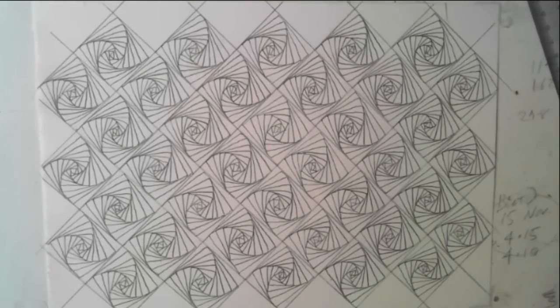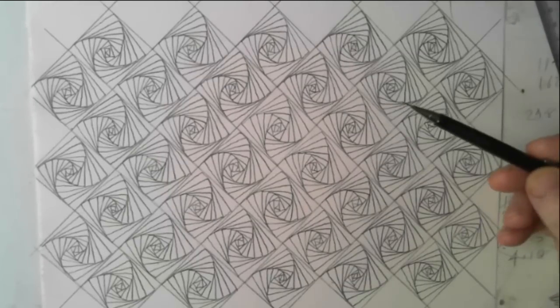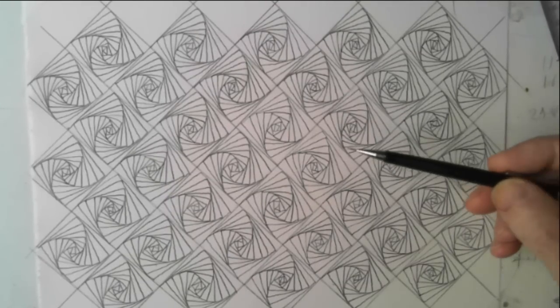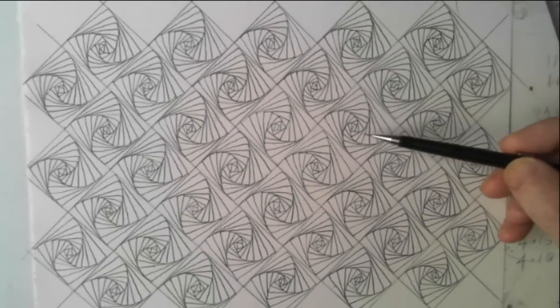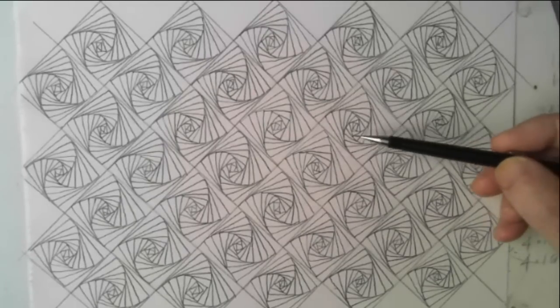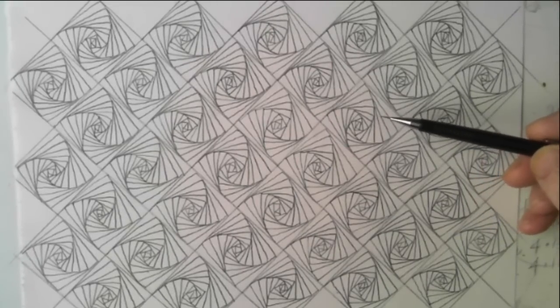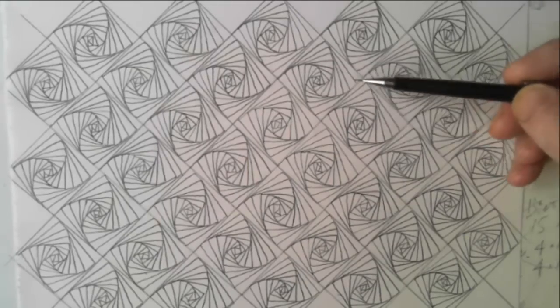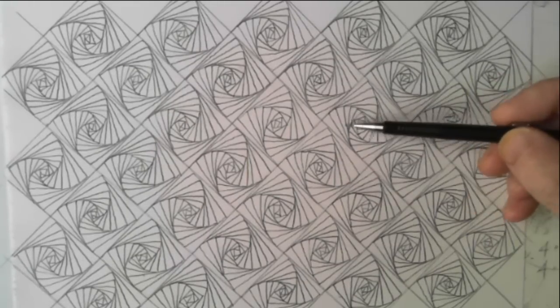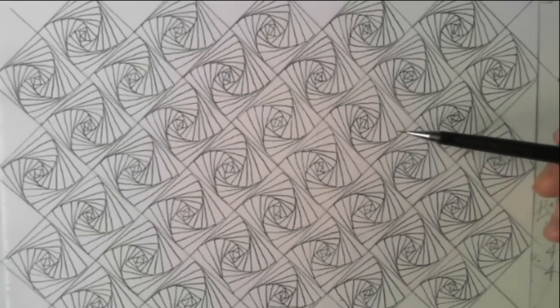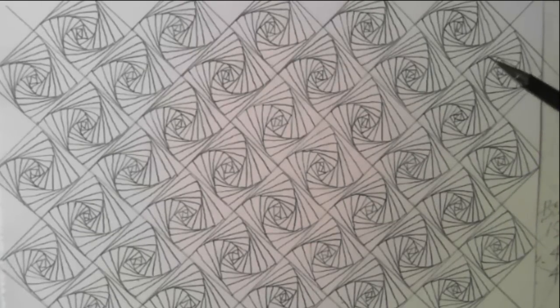So, the interesting thing with this pattern, isn't it? I mean, first of all, you've got these spirals that happen all on their own as you draw them. As you draw the, you don't expect them to occur. And then, when you put them together, you get these interesting tube shapes, which seem to link together across the thing. Totally unexpected.